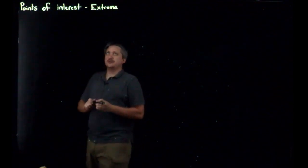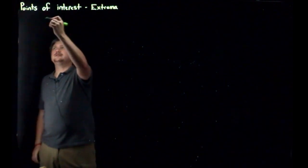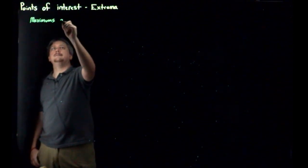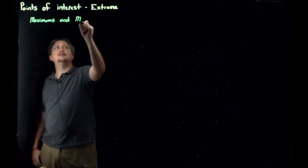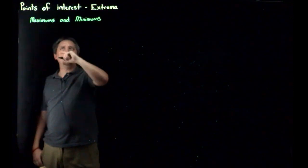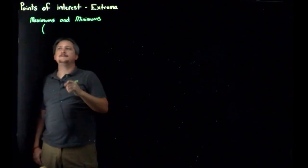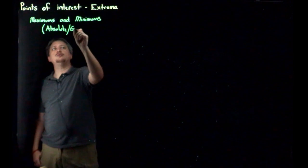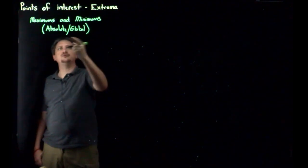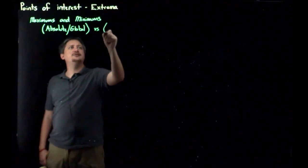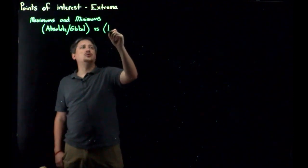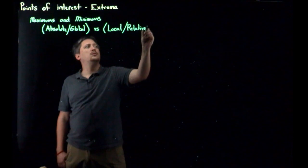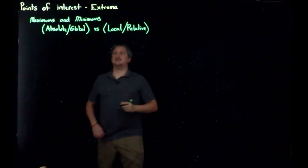So what do we mean with extrema? Simply put, when we talk about extrema, what we're really talking about are maximums and minimums. But these occur in two types. You have the absolute, otherwise known as global. These are used interchangeably versus relative or local.